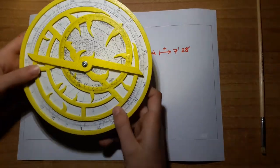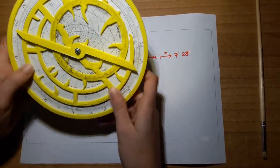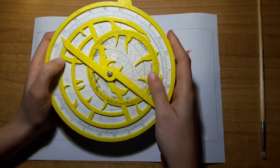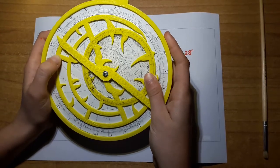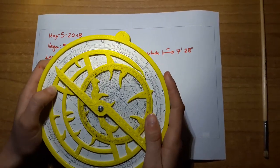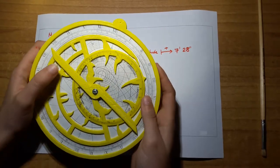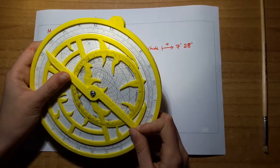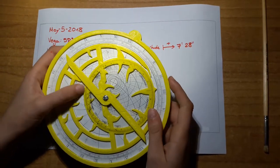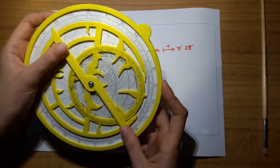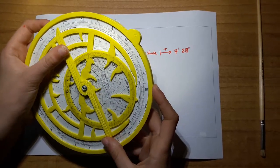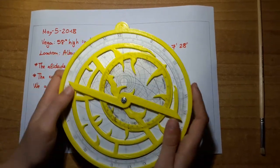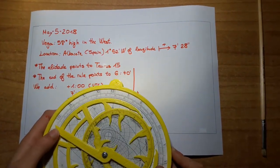Now, this is the rate, and this is the pointer of Vega. We move the pointer of Vega to 58 degrees, here. And we move the rule to Taurus 50, here. And we see that it points to 6 hours 40 minutes.